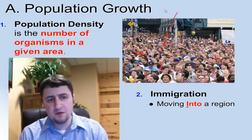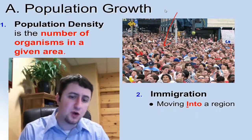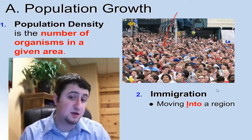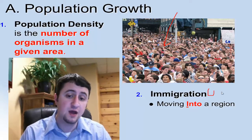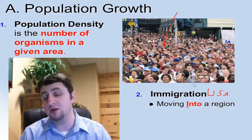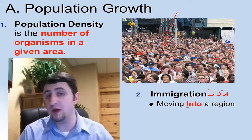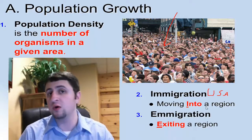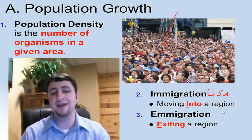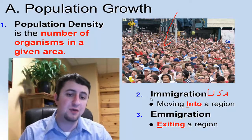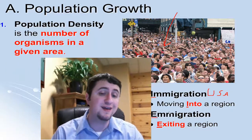Populations can also grow due to immigration — the United States is very well known for that, with a lot of people moving in, growing our population. And then there's also emigration, where organisms exit a region. To keep these straight: think immigration as 'in' and emigration as 'exit.'